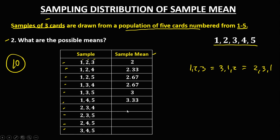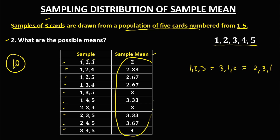For 2, 3, 4: sum is 9, so sample mean is 3. For 2, 3, 5: sum is 10, so 3.33. For 2, 4, 5: sum is 11, divided by 3, that's 3.67. For 3, 4, 5: 3+4+5=12, divided by 3, that's 4. So therefore, these are all the possible sample means.